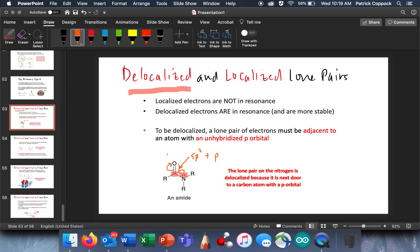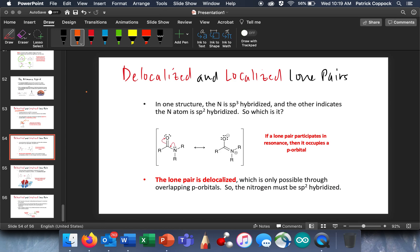And these guys can go up here. So, to be delocalized, a lone pair has to be next to an unhybridized p orbital. So, let's go and look at a specific example. In one structure, the nitrogen is sp3 hybridized, and the other indicates the nitrogen is sp2 hybridized, which is it? Look at this.